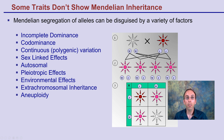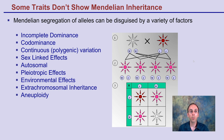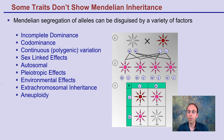Some traits don't show Mendelian inheritance — they follow different rules. Mendelian segregation of alleles can be disguised by a variety of factors, including incomplete dominance, co-dominance, sex-linked factors, and environmental effects. There are a lot of things that cause genes not to be as simple as we saw with Gregor Mendel and his pea plants.